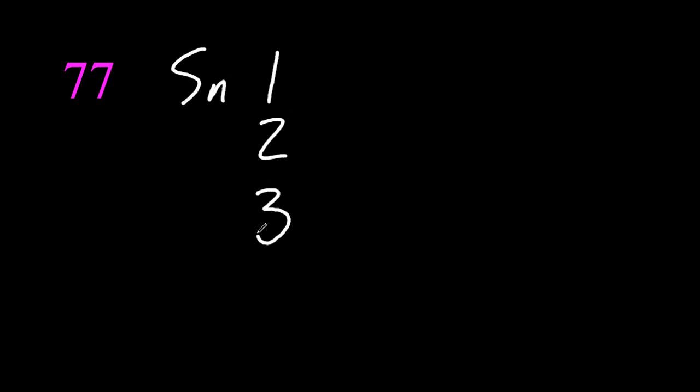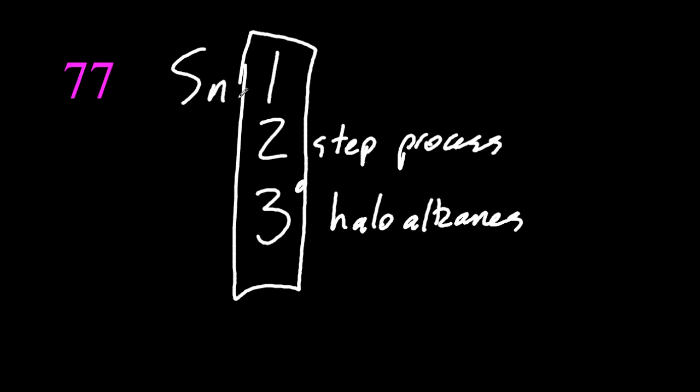77. SN1 is a two-step process for tertiary halo alkanes. 1, 2, 3. That's how I remember it.